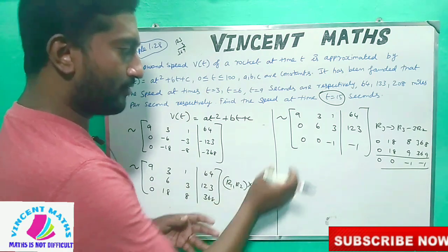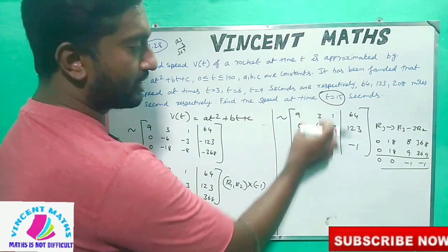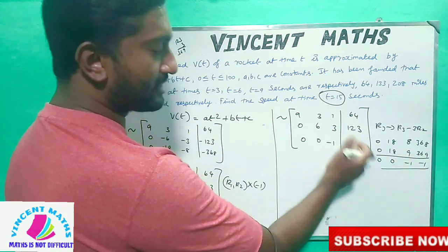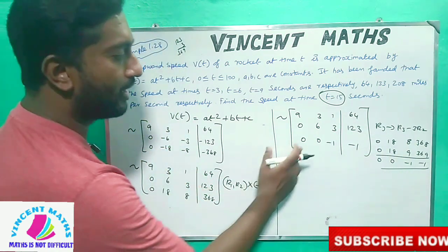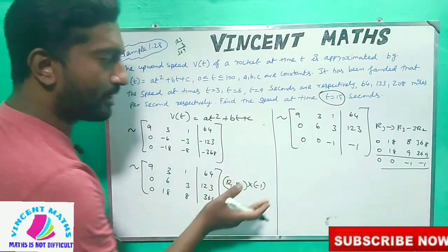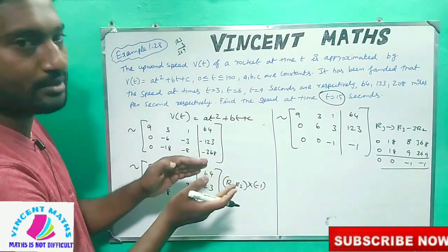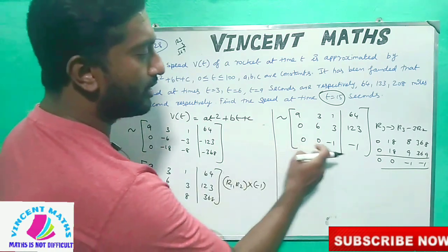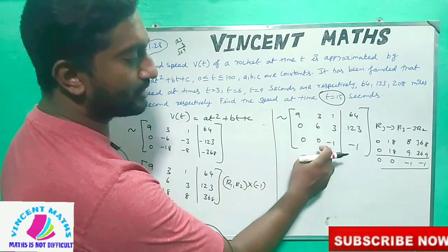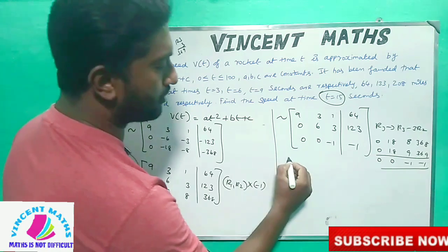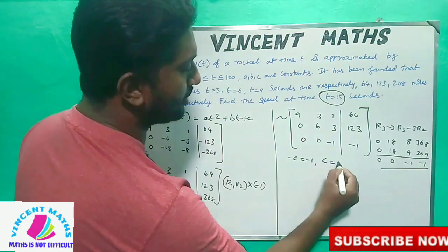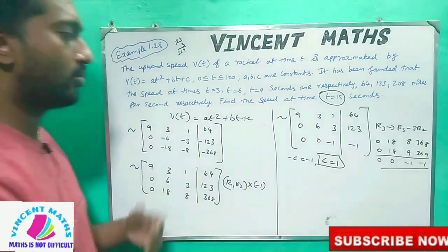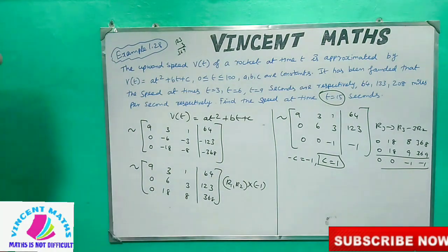Now we have the upper triangular matrix. Column A is first, column B is second, column C is third, with the right-hand side after the slash. From the third row equation, minus C equals minus 1, so C equals 1.